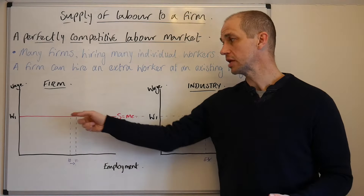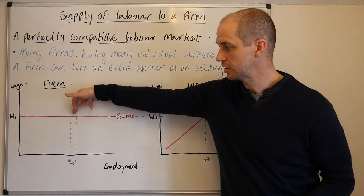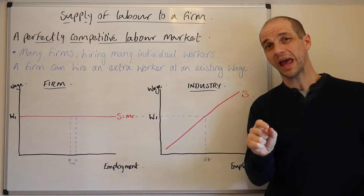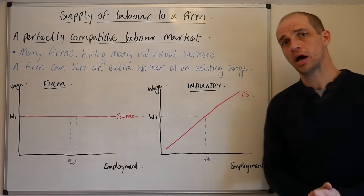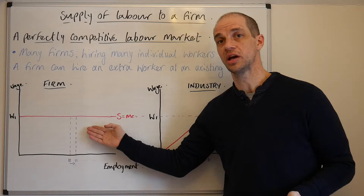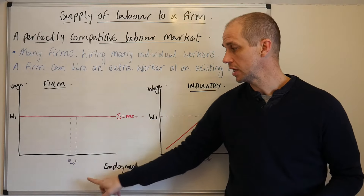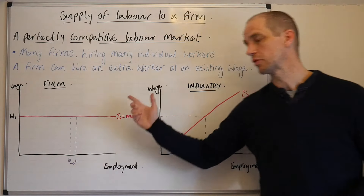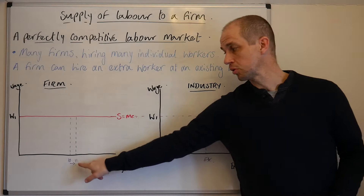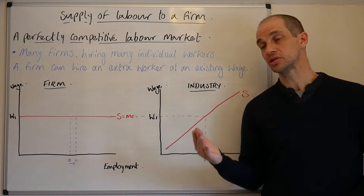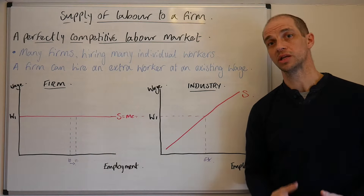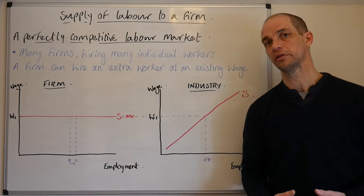Say the wage being paid in this industry is £8 per hour — this firm will also pay £8 per hour, because that's what's happening in the industry. The 10th worker would earn £8 and the 11th worker would earn £8. That means the marginal cost of employing the 11th worker is the same as employing the 10th worker. Therefore, the supply equals the marginal cost in this perfectly elastic supply curve.